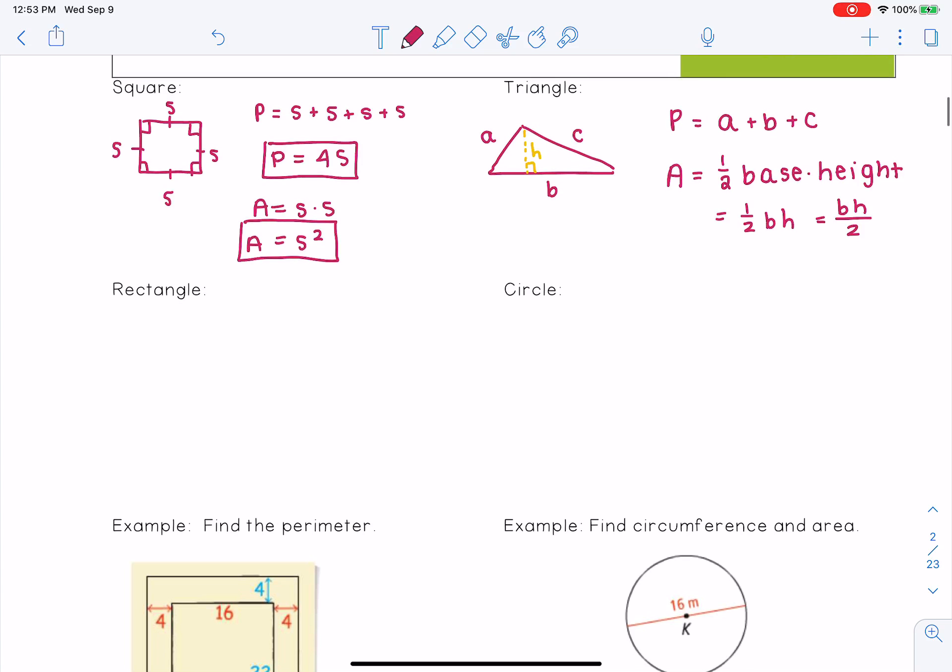For rectangles, remember we have our four sides that are perpendicular. These two sides are the same and these two sides are the same. And so we have our base and our height. So our perimeter is base plus base plus height plus height, which is 2 times the base plus 2 times the height. And our area is just base times height.